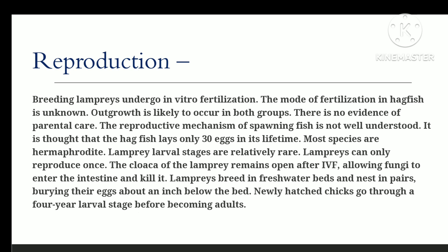There is relatively little of the lampreys' larval stage present. Lampreys can only reproduce once. Lampreys reproduce in freshwater rivers by building a nest in pairs and burying their eggs about an inch beneath the substrate. Before becoming adults, the hatchlings go through four years of larval growth.